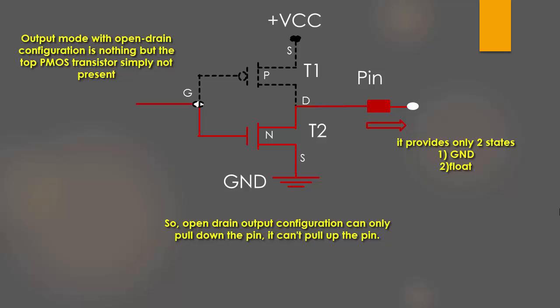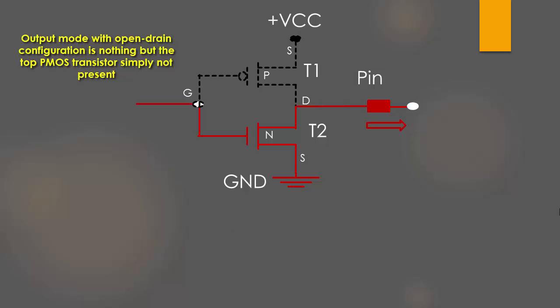The open drain output is useless until you provide the pull-up capability by introducing a pull-up resistor, by either activating an internal pull-up or external pull-up resistor. So without the pull-up resistor applied to open drain, this mode is completely useless.